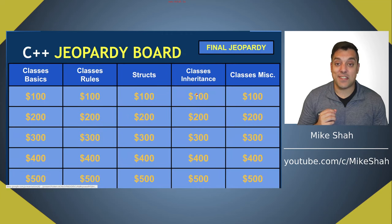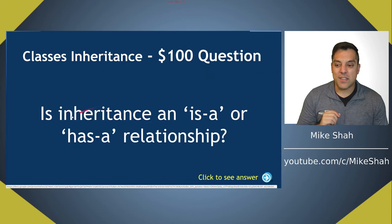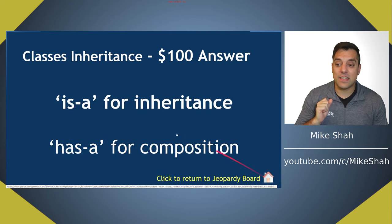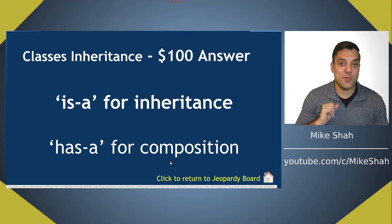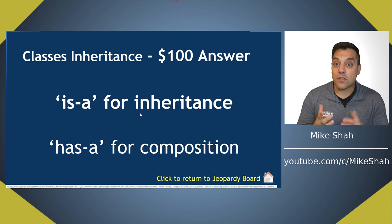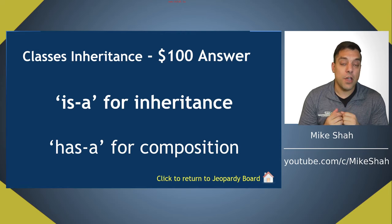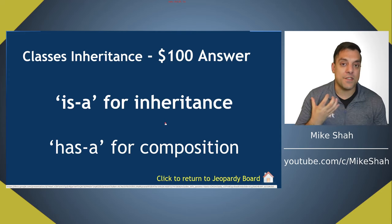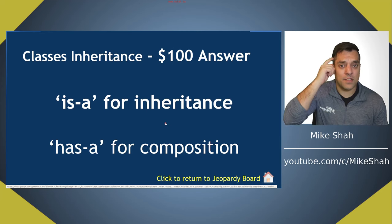That finishes structs. Now diving into inheritance. For 100: is inheritance an is-a or has-a relationship? It is an is-a relationship for inheritance, and has-a for composition. Think of inheritance as meaning something truly is a type in that family of objects, allowing you to take advantage of inheritance-based polymorphism and avoid duplicating code.